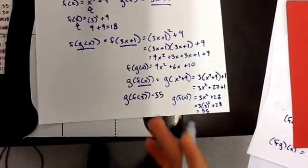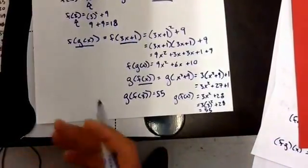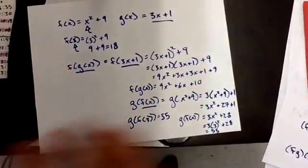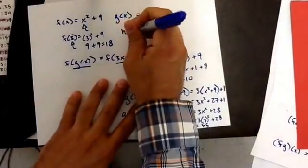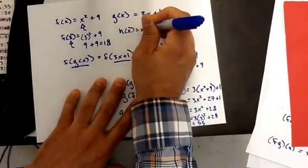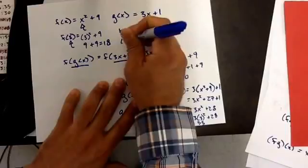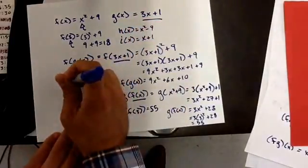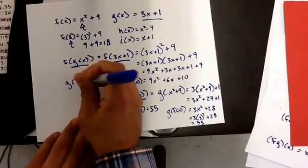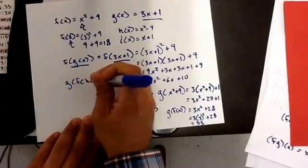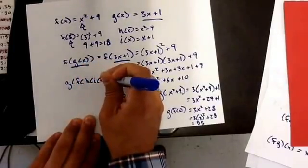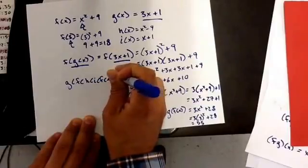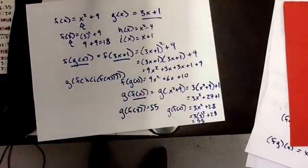Now, how do I make it really, really hard? I give you a lot of function rules, and I make you do them all together. So then I tell you h(x) is this, i(x) is this. And then I tell you to find g(f(h(i(f(4))))). And you just got to go through the process.